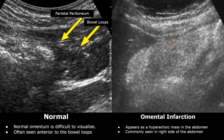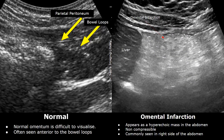Infarction most commonly occurs in the right side of the abdomen. In this image, we see a hyperechoic mass inferior to the liver. After further investigation with CT, it was found to be an omental infarction. Here is another image showing an omental infarction, also on the right side. A hyperechoic mass is seen inferior to the liver. It will be a non-compressible hyperechoic mass.